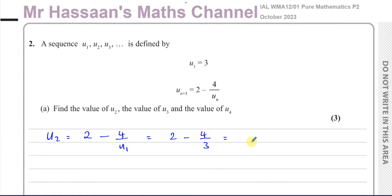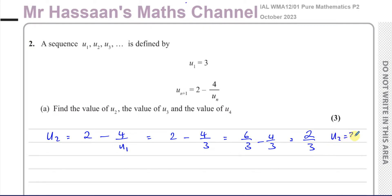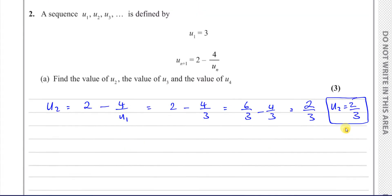We know the first term is 3, so it's 2 minus 4 over 3. That's going to be 6 over 3 minus 4 over 3, which is 2 thirds. So the second term is 2 thirds.